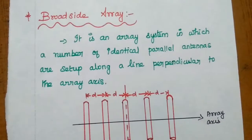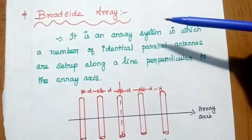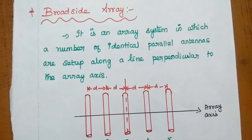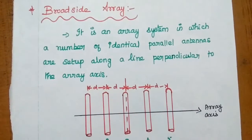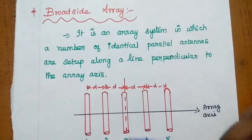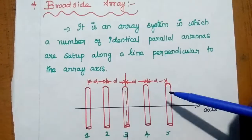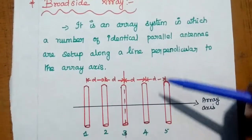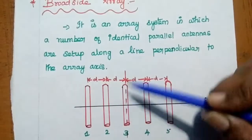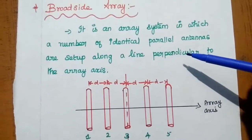The first one is broadside array. Broadside means perpendicular to the array axis. It is an array system in which a number of identical parallel antenna elements are set up along a line perpendicular to the array axis. So this black line is the array axis, and we place the antenna elements along it. The antenna axis is perpendicular to this array axis — that is the broadside array setup.